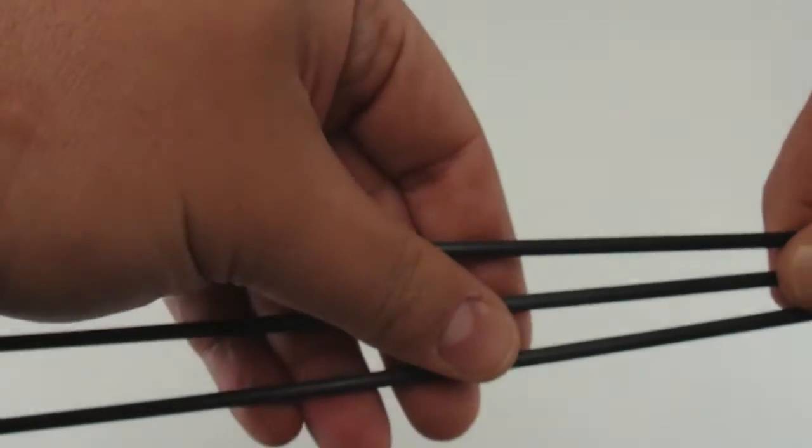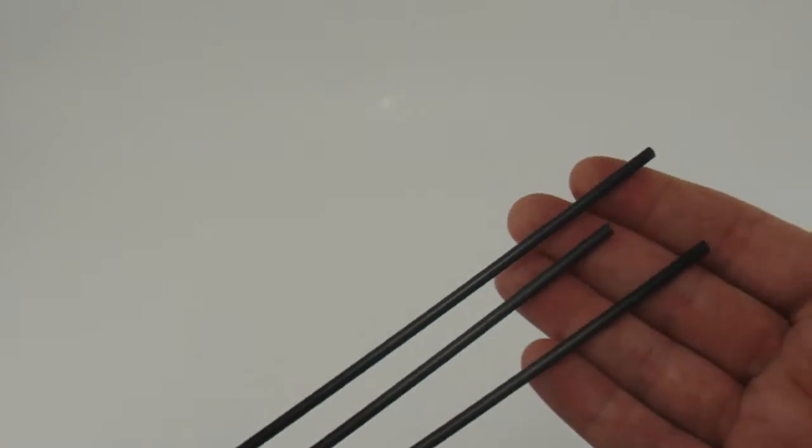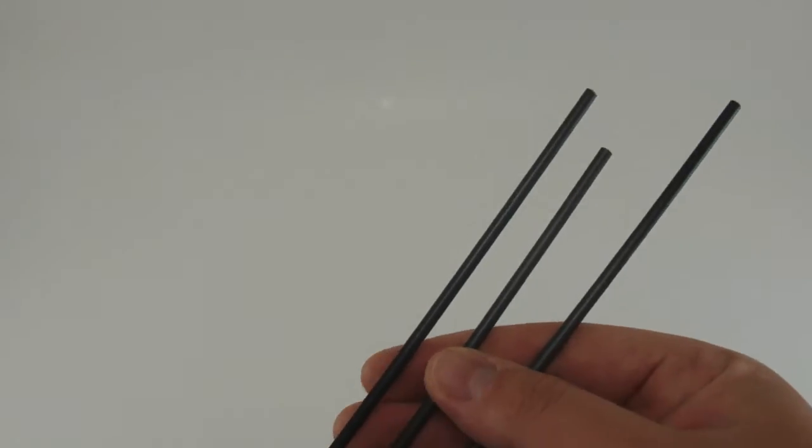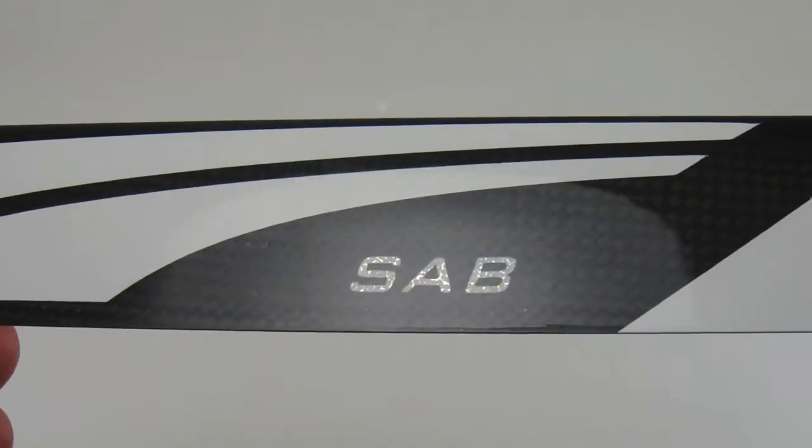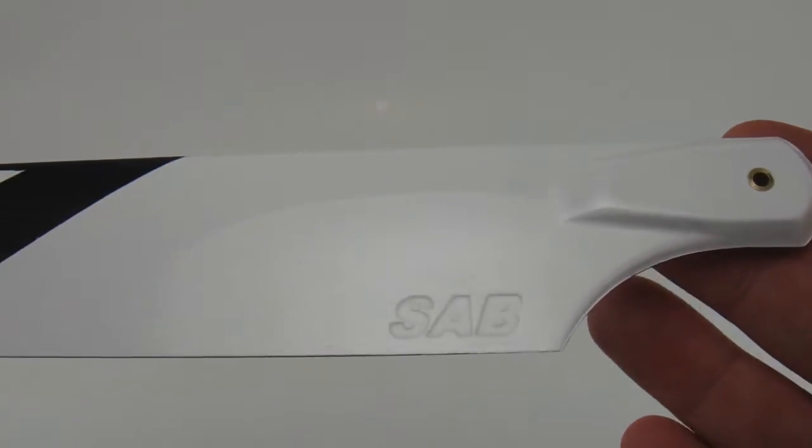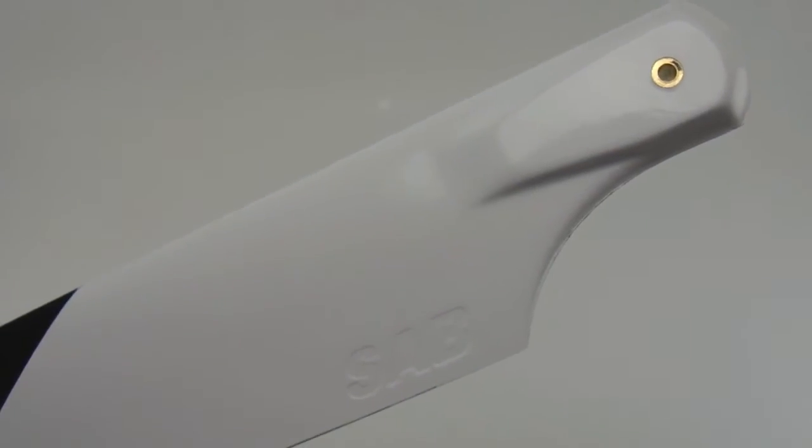The first pieces up are the longer boom supports and longer tail control rod. Next are the Saab 470 millimeter carbon fiber main blades. These are great when used with a flybarless system.